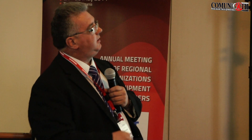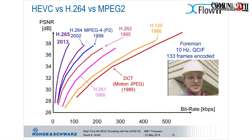One of the targets for HEVC is surgery — the last thing you want is a remote surgeon saying 'make the cut' with a half-second delay from where you're actually working. So this is showing the standard bitrate performance improvements: H.262 is the MPEG-2 standard, then MPEG-4 Part 2, then H.264 in 2002, and the new H.265 is really delivering very high performance — halving the bitrate with each iteration.